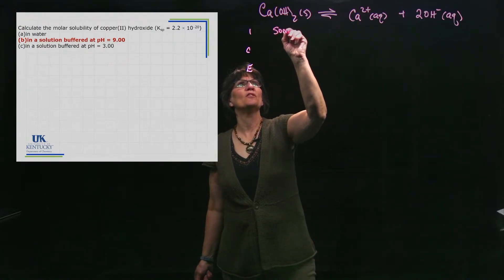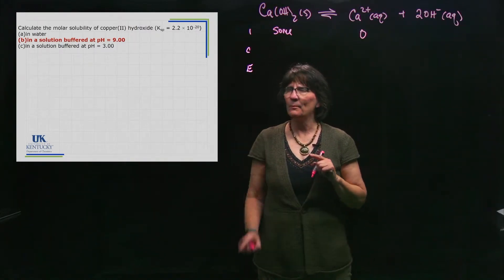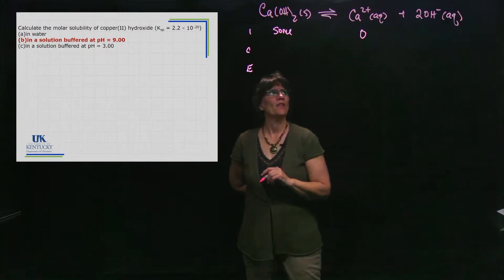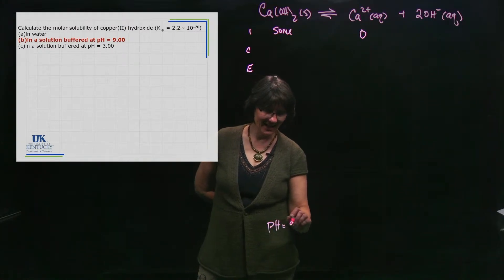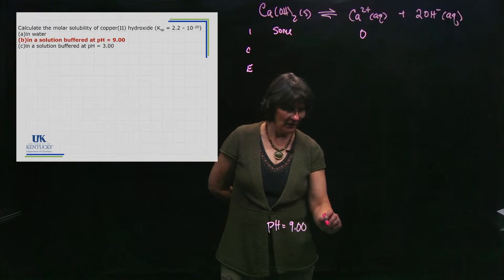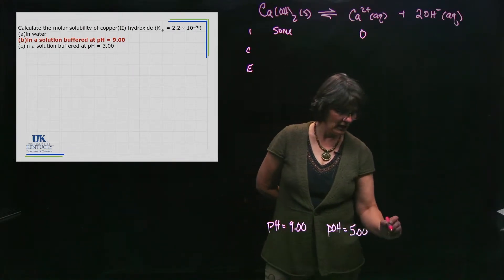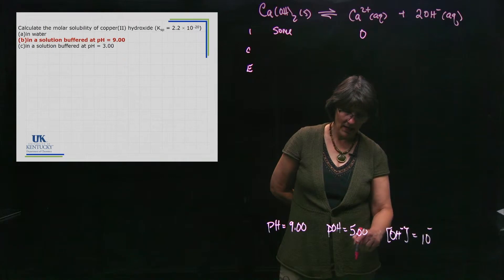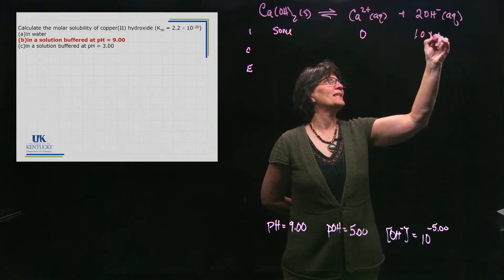What I'm trying to figure out is the molar solubility, which is s. If I dump some solid into the solution, I don't have any calcium yet, but since I'm putting it in a buffered solution at pH 9, I do know the OH⁻ concentration. If pH is 9, then pOH is 5, because 14 minus 9 equals pOH. So the OH⁻ concentration is 10 to the minus 5, which gives 1.0 × 10⁻⁵.